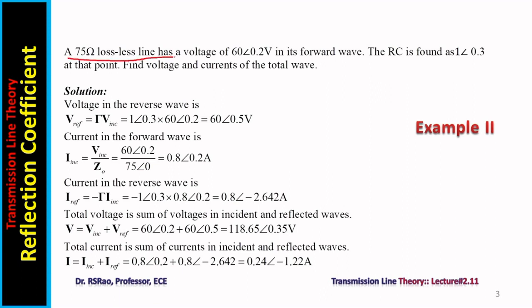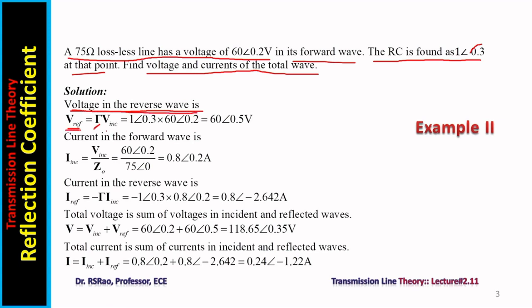A 75-ohm lossless line has a voltage in its forward wave. The RC is found as 1 angle 0.3 at that point. We need to find the voltage and currents of the total wave. The reflected voltage V-reflected equals the reflection quotient multiplied by V-incident. The current in the forward wave, I-incident, equals V-incident by Z₀. Since Z₀ is available, I-incident is now also available.